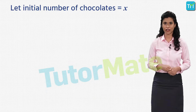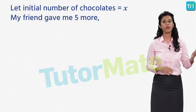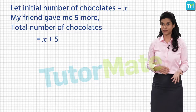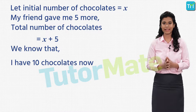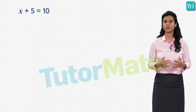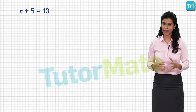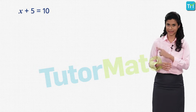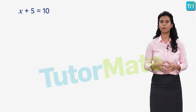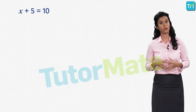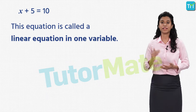Let's understand how this happened. If I were to write this situation mathematically, I would assume that initially I had some chocolates — say X chocolates. My friend gave me five more, which means I have X plus five chocolates now. But since we know that I have ten chocolates now, it means that X plus five is equal to ten. What we have here is an equation in the variable X, where if we solve for X we will be able to find out the number of chocolates I initially had.